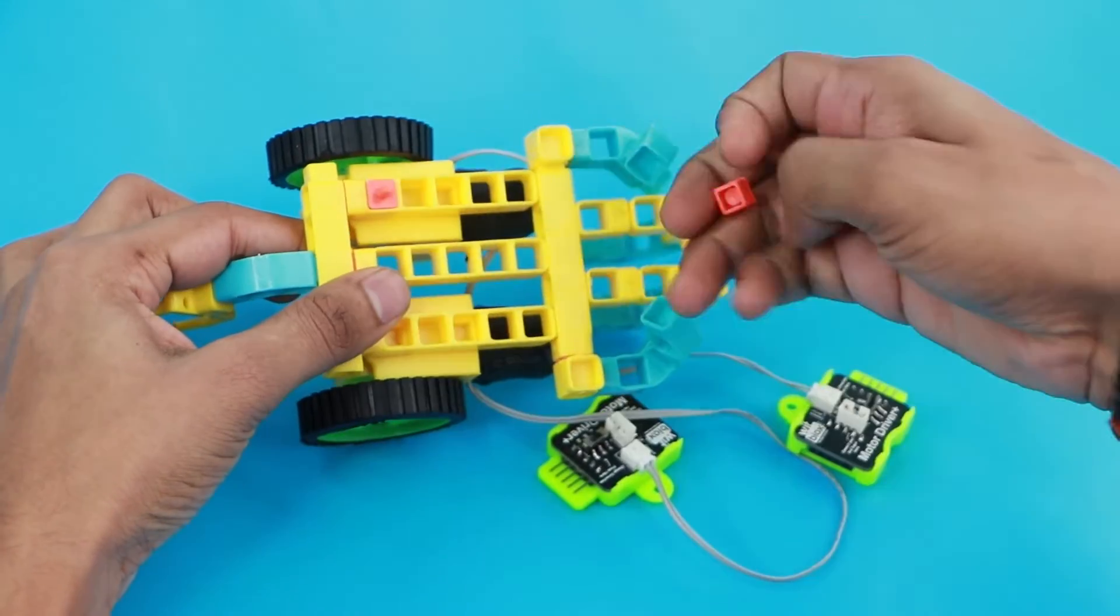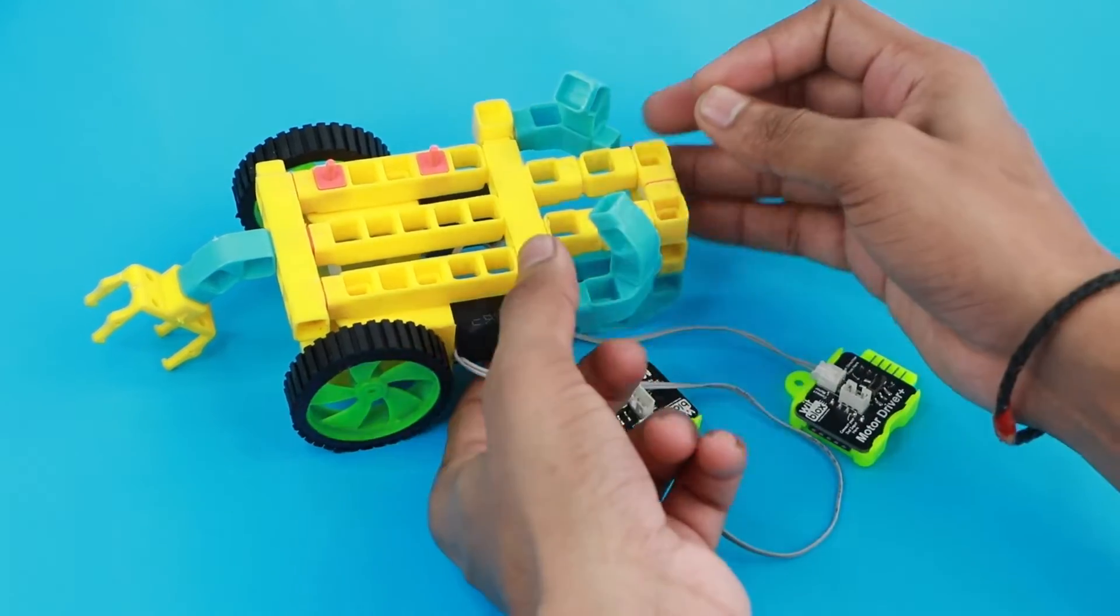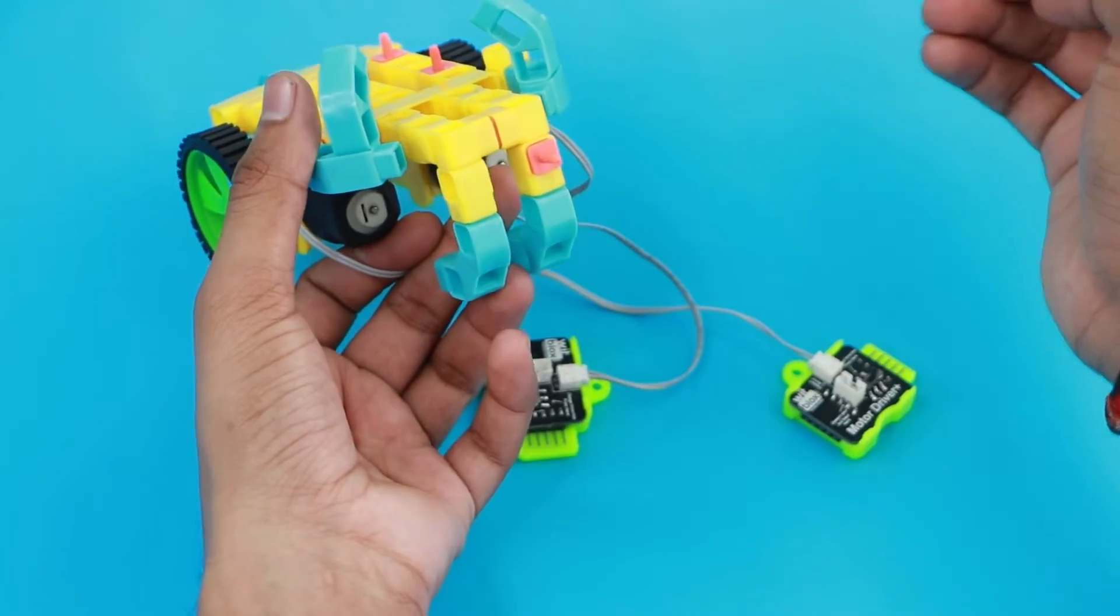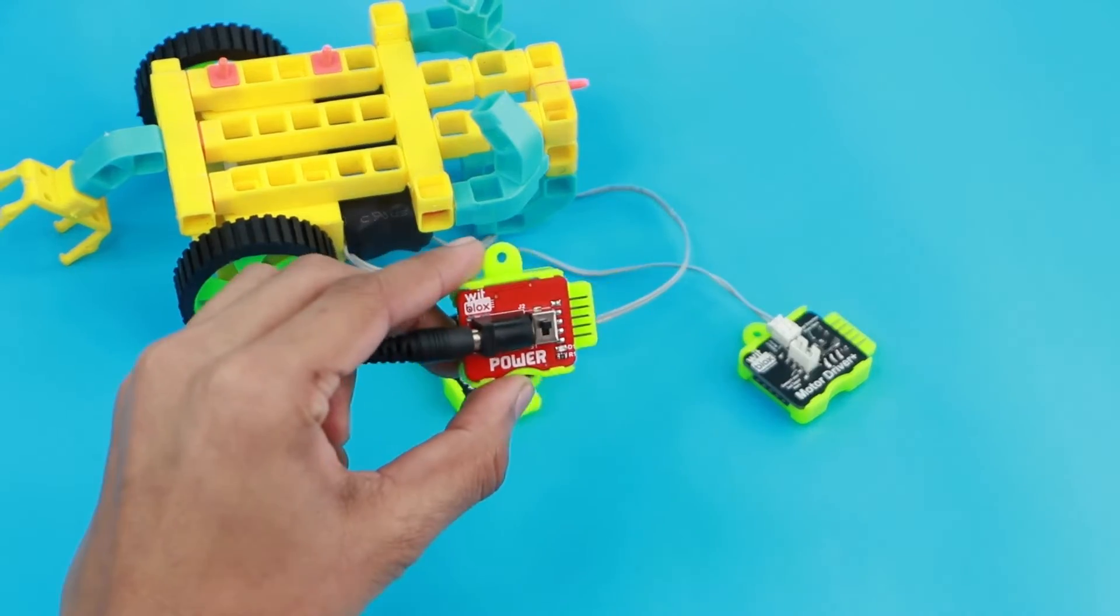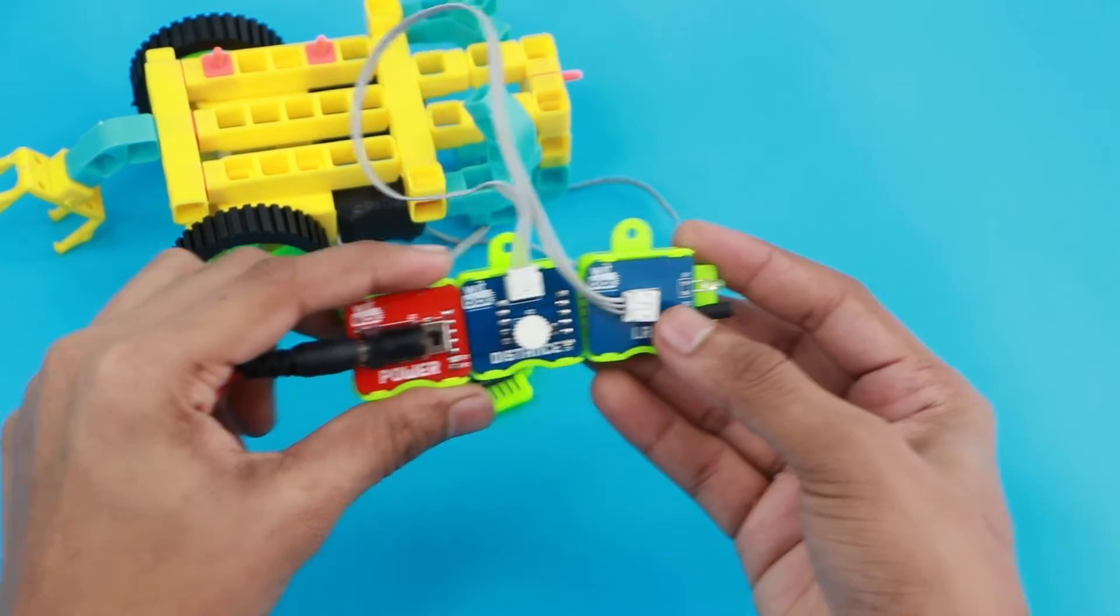Now to attach the blocks on the structure, we will put blocks holder. We will attach a blocks holder at front to hold the IR sensor. We also need an IR sensor to sense the black line.